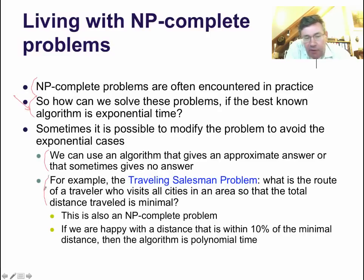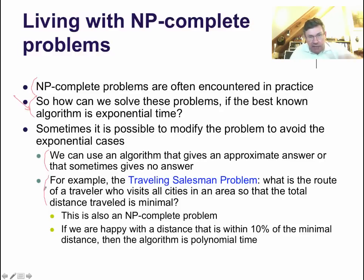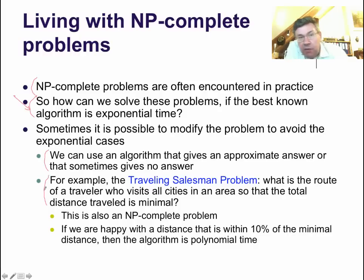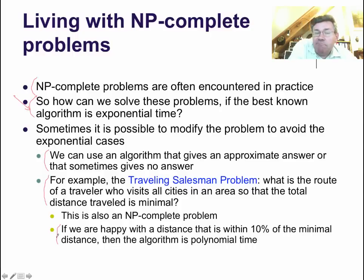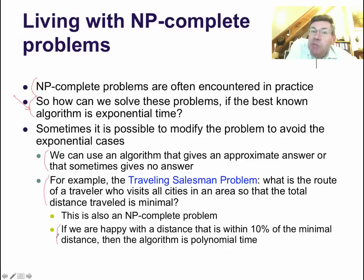Another NP-complete problem is the traveling salesman problem — a very famous one. A traveling salesman has to visit N cities and wants the total distance between all cities to be minimal. This is an NP-complete problem. It's very strange, because it is in some sense equivalent to satisfiability, even though on the surface it looks very different. If we're happy with an approximation up to 10% accuracy, then we can find a polynomial time algorithm. So it's possible to live with NP-complete problems, but it's not always very nice because we have to cut a lot of corners. The open question is still there: is P equal to NP?